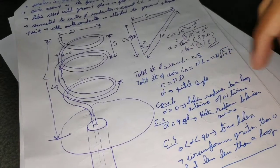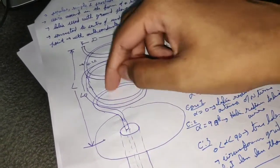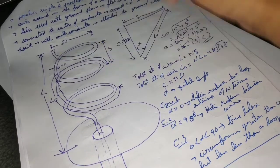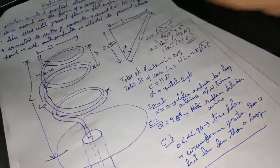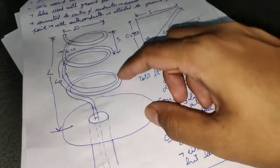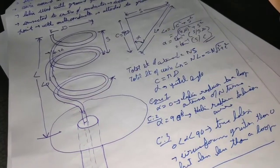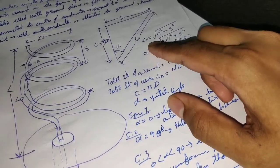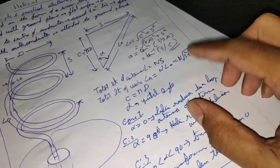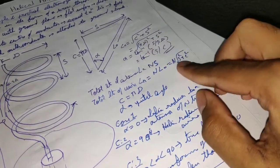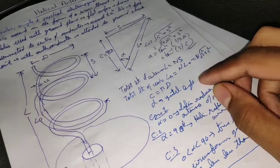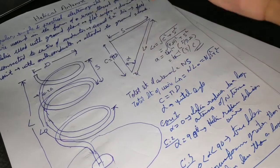This is an important derivation. The total length of the antenna L = N × S, where N is the number of turns. The total length of the wire Lw = N × l₀, and substituting l₀ = √((πD)² + S²) = √(C² + S²), we get Lw = N × √(S² + C²). The angle α obtained here is the pitch angle.